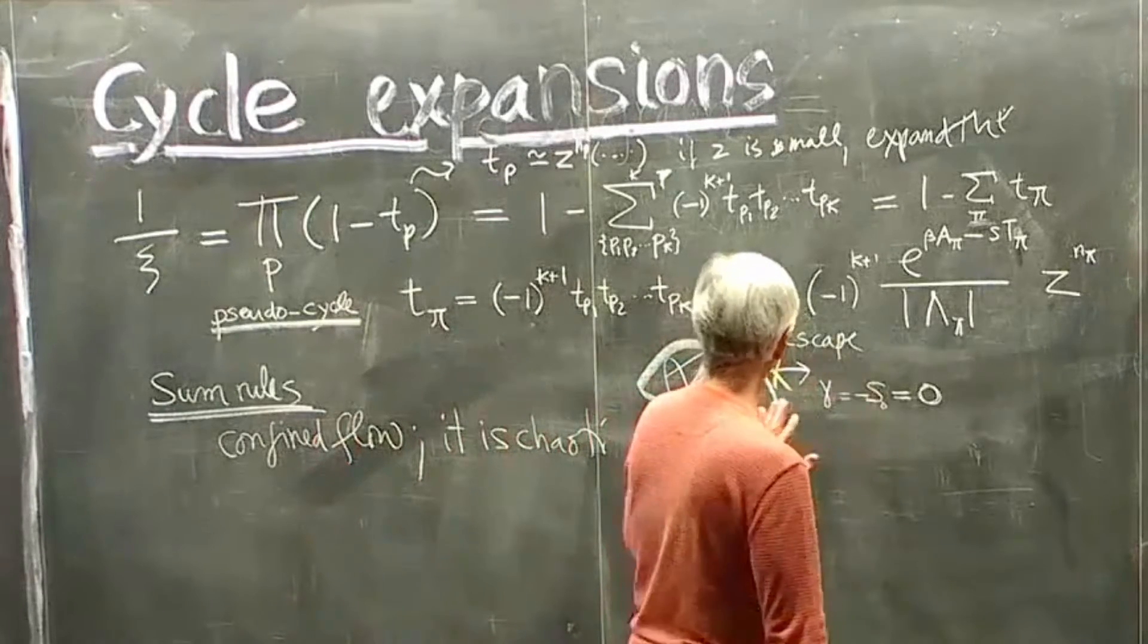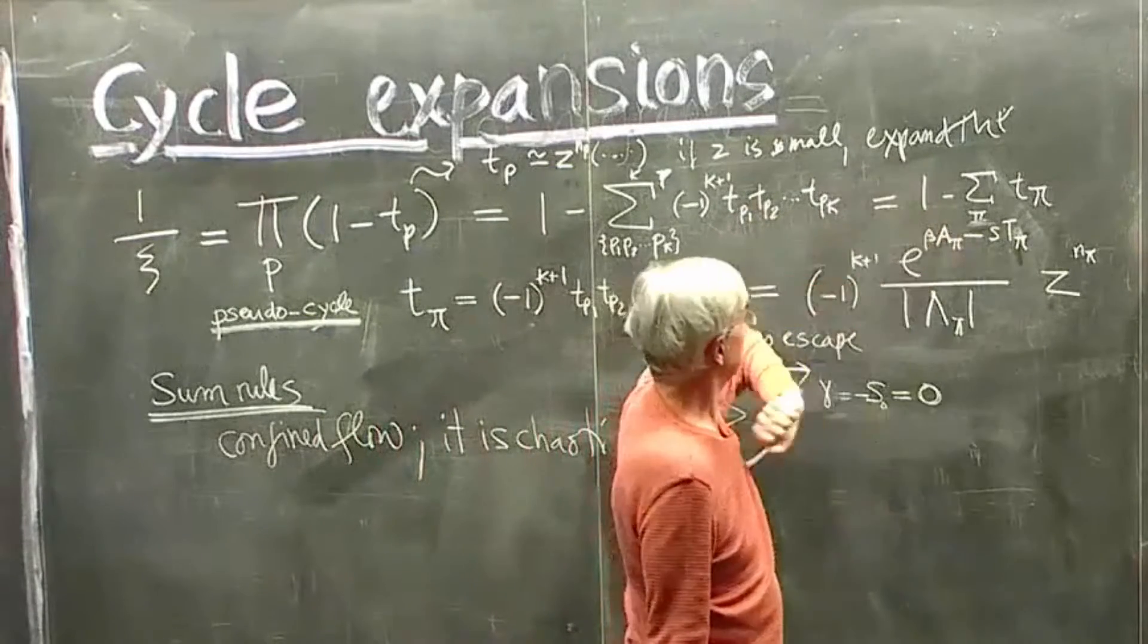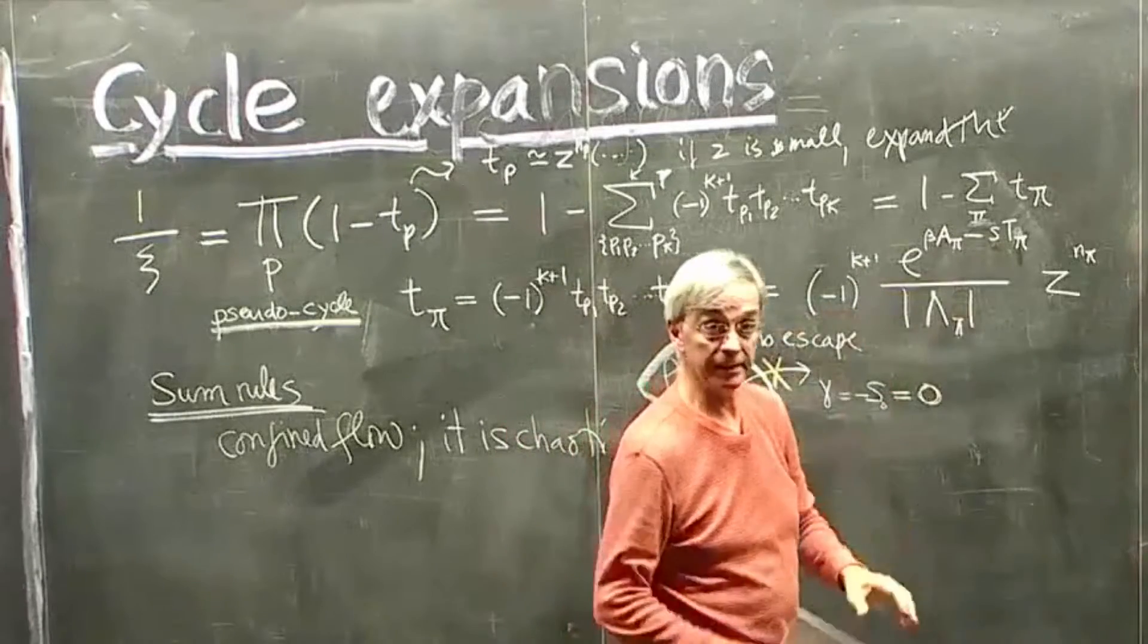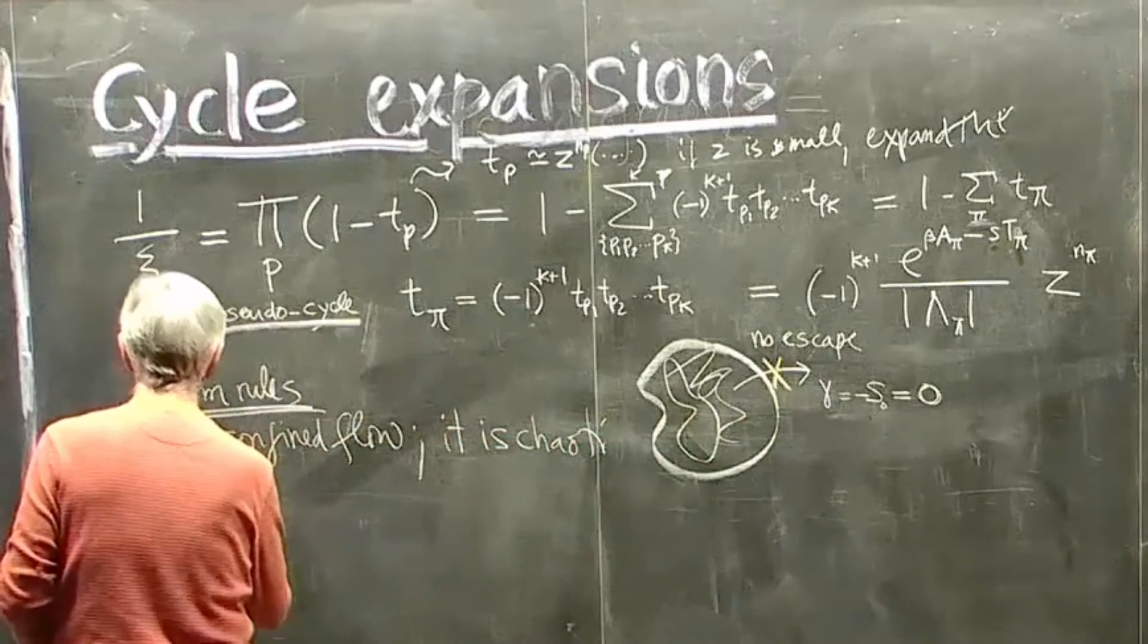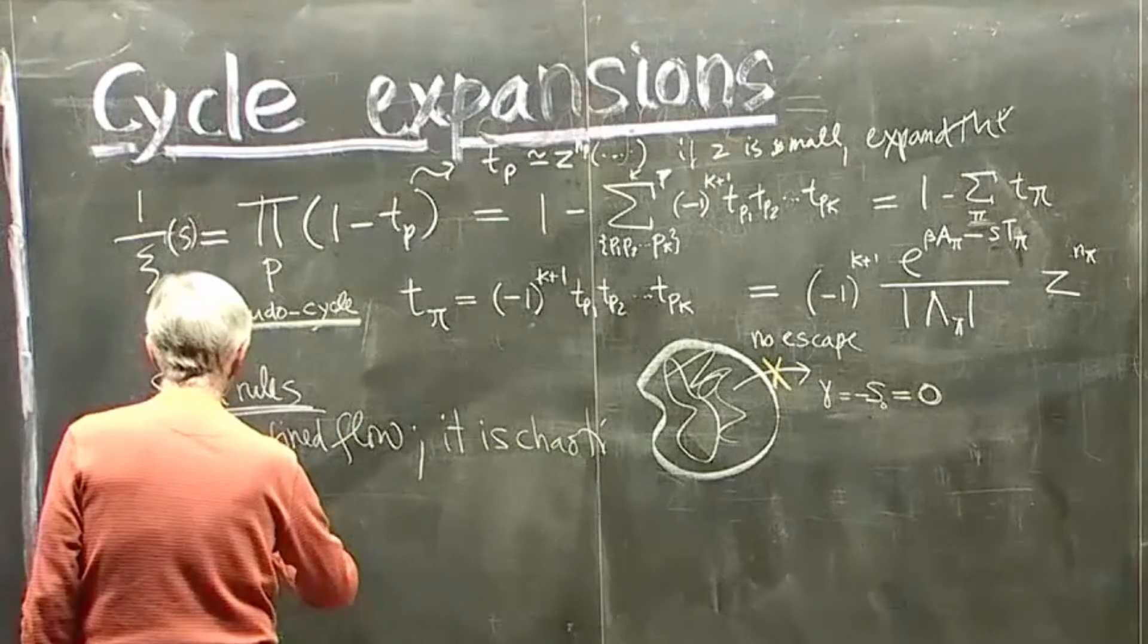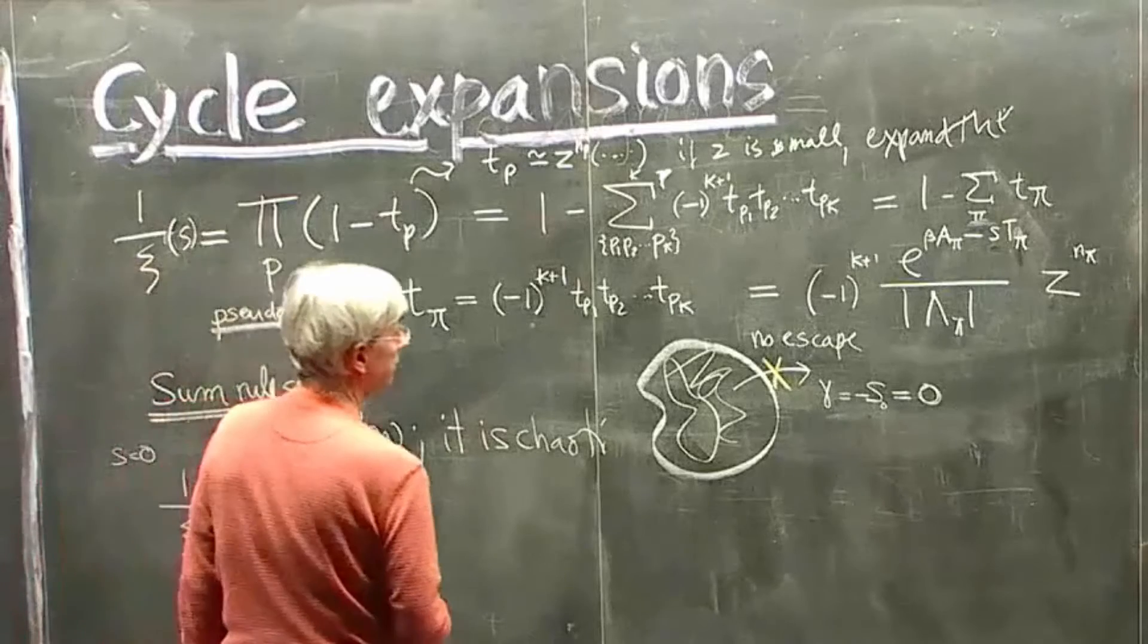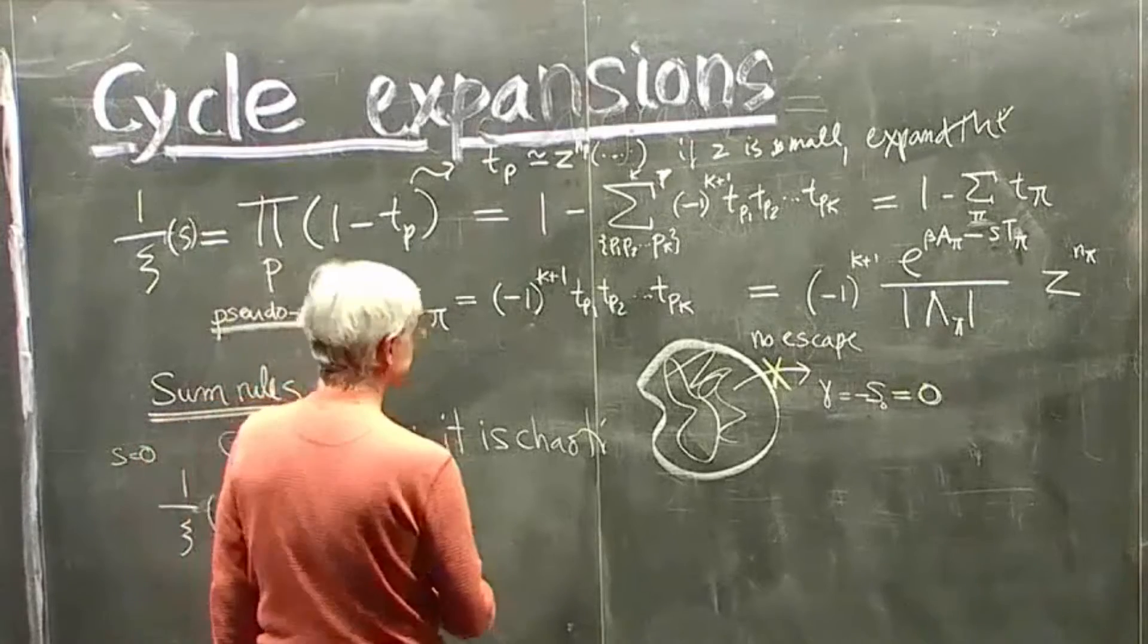Now first of all, this is a geometrical property of flow, so our observable will set beta equal to zero. We will not be computing any observables at the moment, and the leading eigenvalue means that my answer doesn't depend on tp. And I get this amazing rule that says one over sigma, which is a function of s, the dynamical zeta function at s equals zero, which is the sum over one minus all pseudocycles tp.